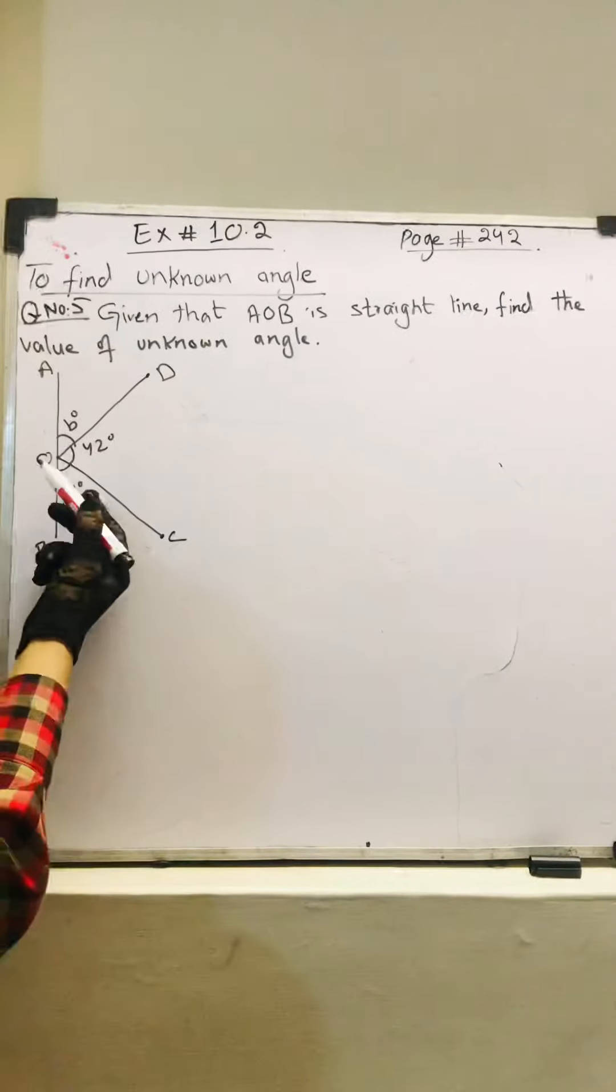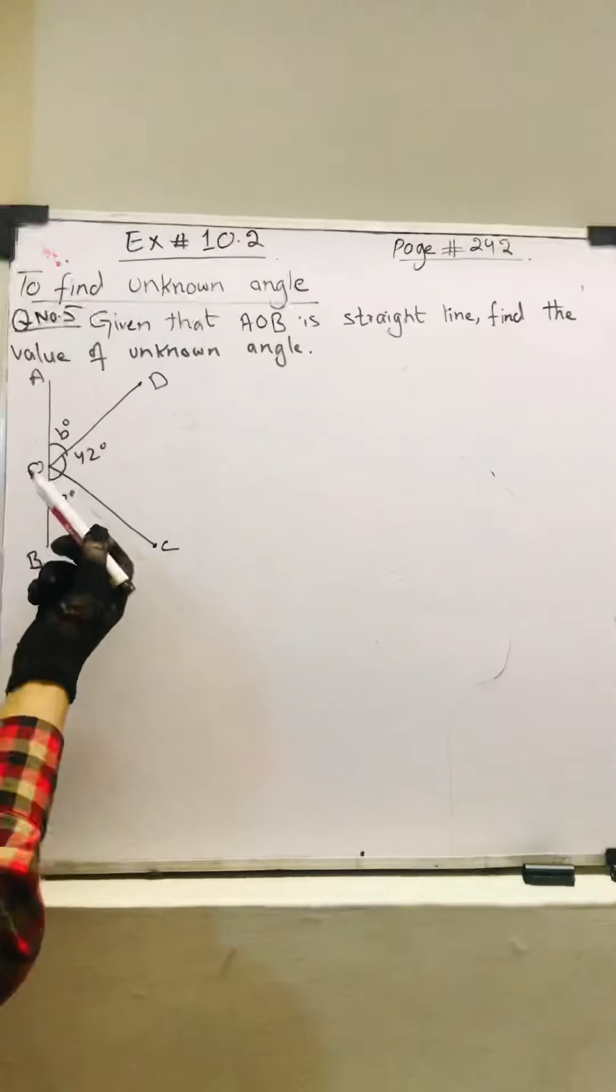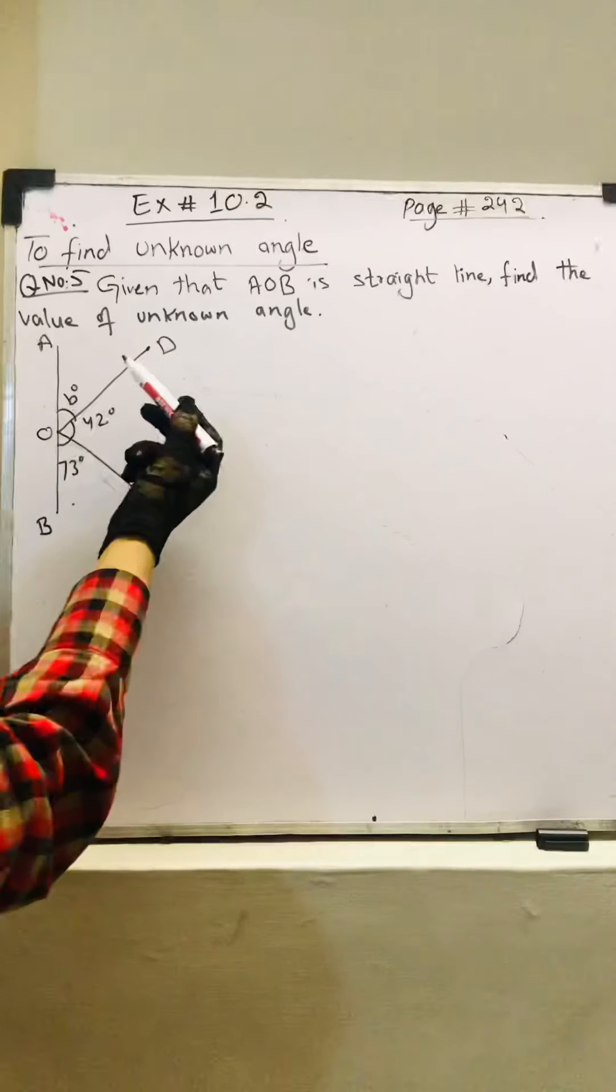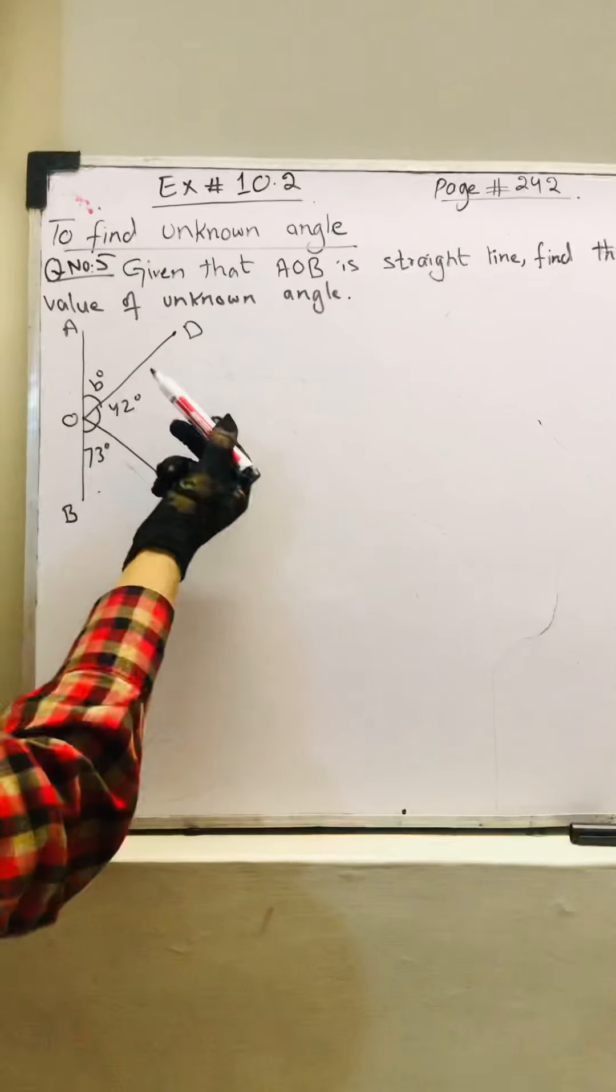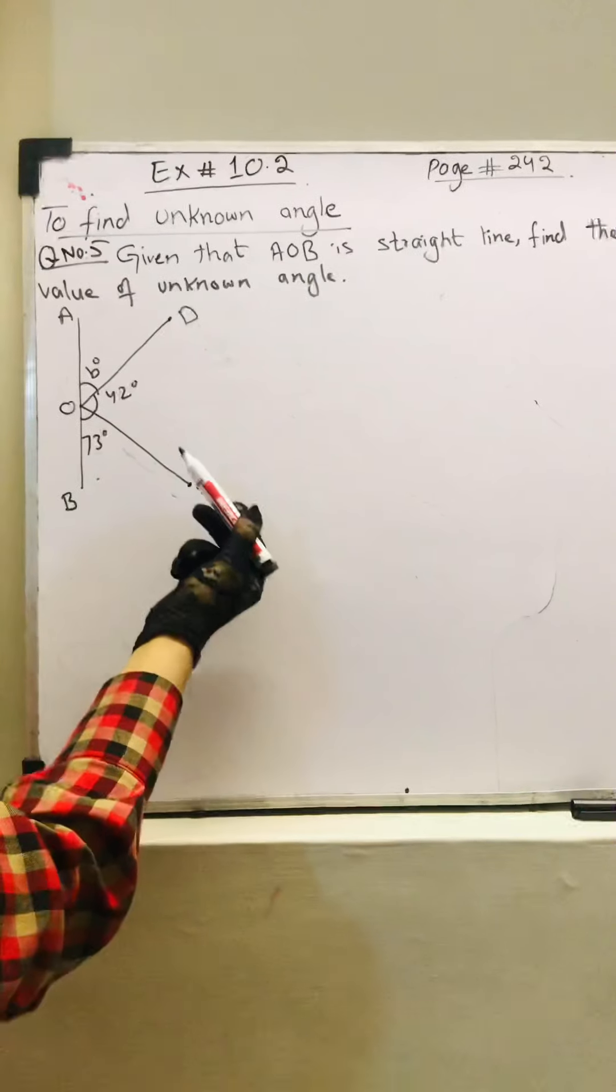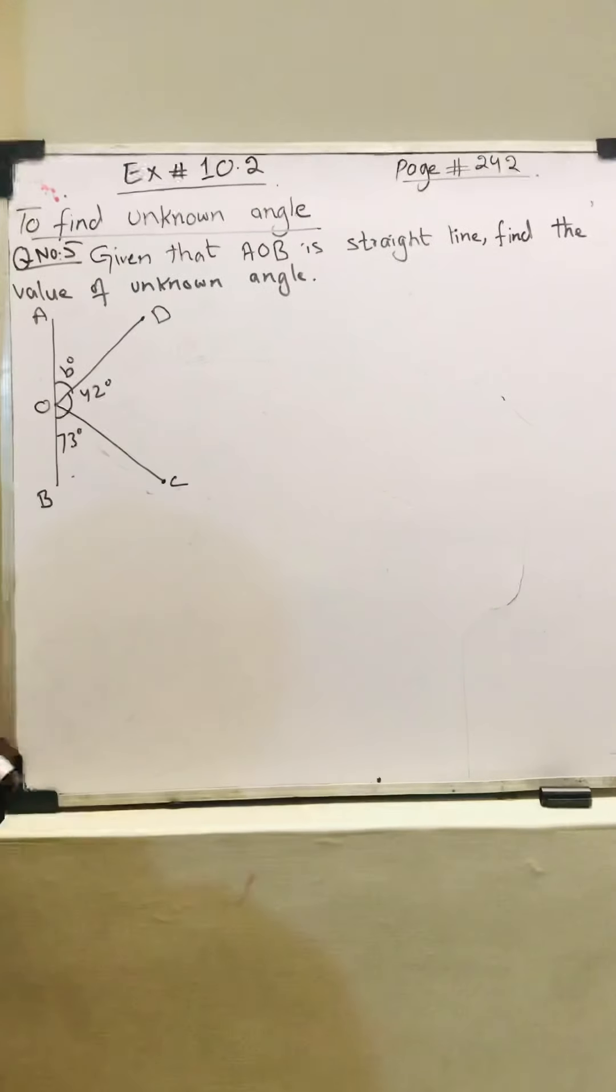This is the vertex or origin, so this is the vertex of this angle, this angle, as well as that angle. Furthermore, OD is the same side of this angle as well as that angle. Similarly, OC also lies here as well as there.